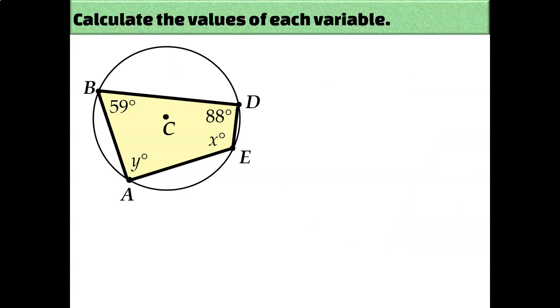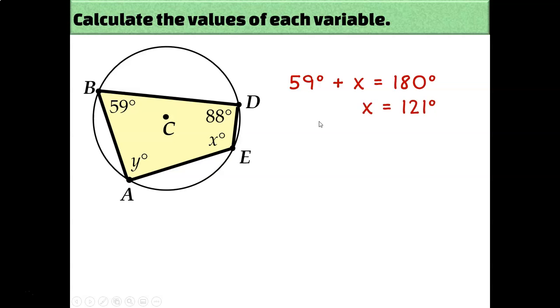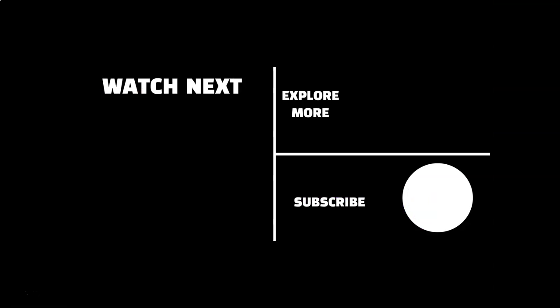We can also use an inscribed quadrilateral to calculate missing angle measurements. Since the quadrilateral is inscribed in the circle, opposite angles must add up to 180. So 59 plus x equals 180, meaning x must be 121. And 88 plus y equals 180, so y must be 92. That's all you need to know about inscribing quadrilaterals and triangles in a circle. In the next part of this lesson, we're going to put the previous three videos together and solve for missing angle measurements and arc measurements in circles.